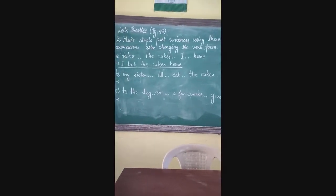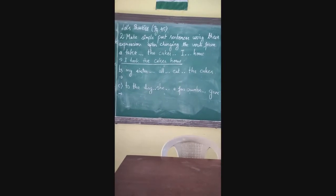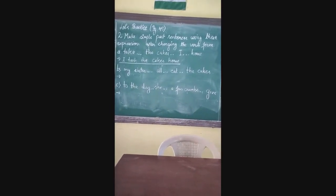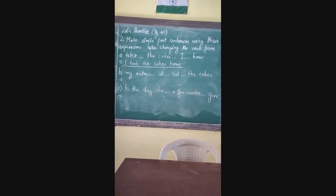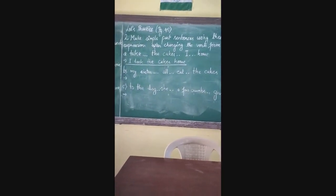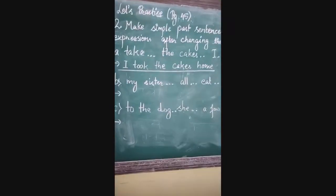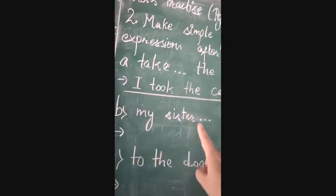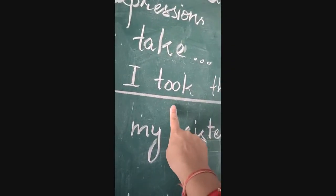Okay children, let us continue with question number 2 on page 45. Make simple past sentences using these expressions after changing the verb form. Some expressions are given and you have to change the verb and make simple past sentences. One has been done for you as an example. Example A: 'Take the cakes home.' Here 'take' is the verb. We have to find the verb, change it into past form, and then make the sentence.